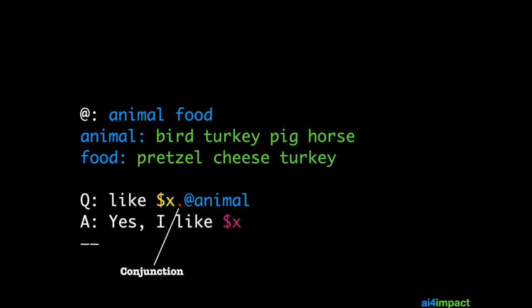So the at sign is a constraint that puts a limit to what can be matched by the dollar x. So the dollar x still receives and matches any word but the at animal symbol will constrain that so it only matches things which are animals.